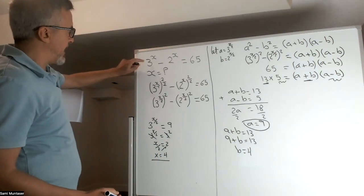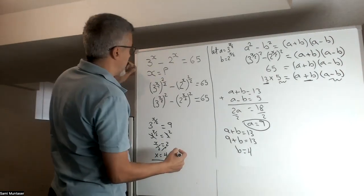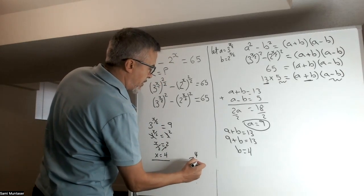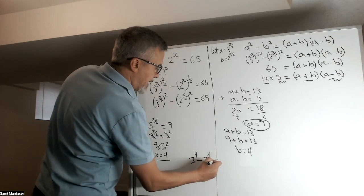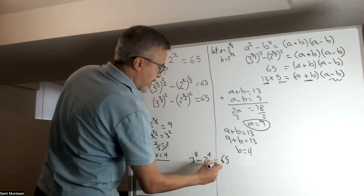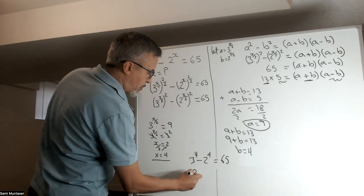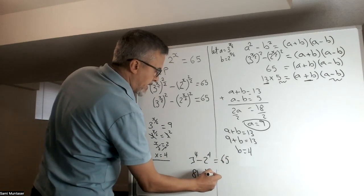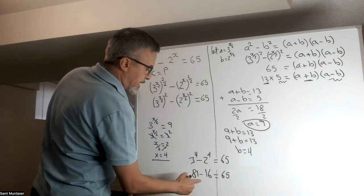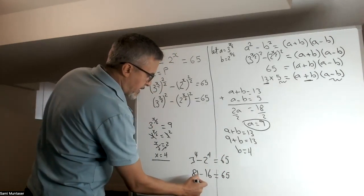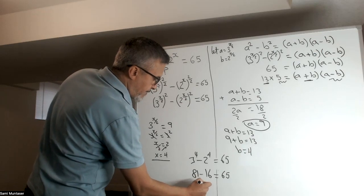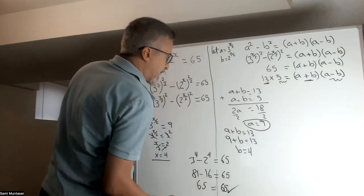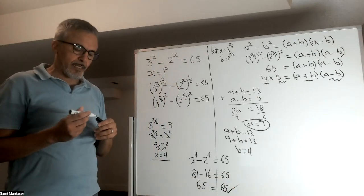We're going to go back and check if that works in the original equation. So, now we have 3 to the power of 4 minus 2 to the power of 4, and that should equal 65. Now, 3 to the power of 4 is 81 minus 2 to the power of 4, which is 16, equals 65. And 81 minus 16 will give me 65 equals 65. Check. And that's how you get the answer for this question.